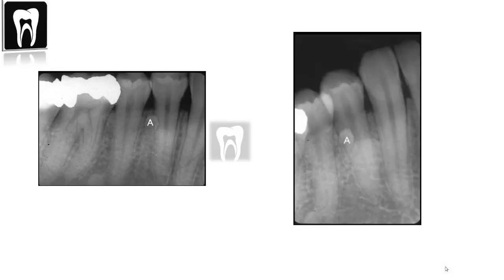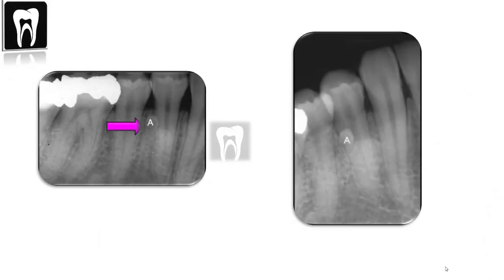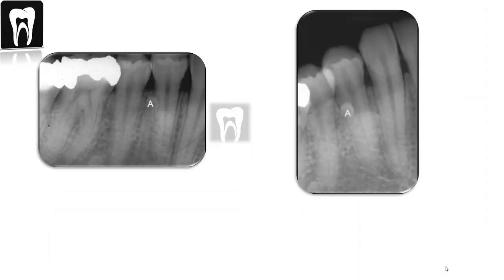This is our first example. We have a premolar periapical radiograph and a canine periapical radiograph. The premolar periapical radiograph would be much more distal and the canine periapical radiograph would be to the mesial. We have a tiny radiopaque object labeled A — it's a supernumerary tooth in the mandible. Using five steps with two images above, image number one is the premolar periapical radiograph and image number two is the canine periapical radiograph.